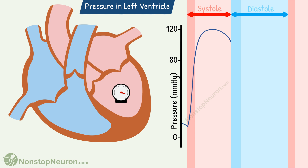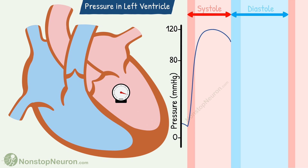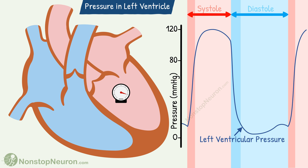Then the aortic valve closes and diastole begins. During diastole, pressure first falls and then gradually starts rising. The next cycle begins with systole. So this is how pressure change occurs in the left ventricle.